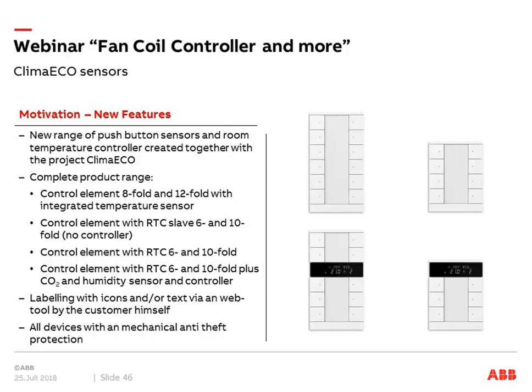Then we have control elements with RTC Slave functionality — 6 and 10-fold components with a display and integrated temperature sensor, but no controller inside, since we already have it in the fan coil controller. Using the RTC Slave together with FCCS gives full functionality, and the customer sees no difference compared to a classical room temperature controller. If desired, a complete room temperature controller with the same look and feel — display with 10 and 6 push buttons — is also available.